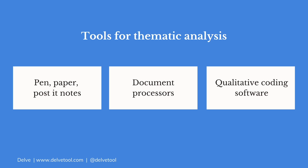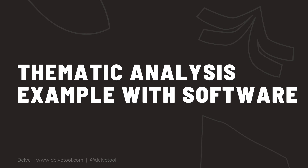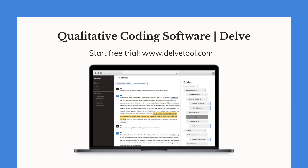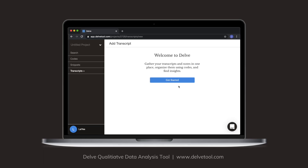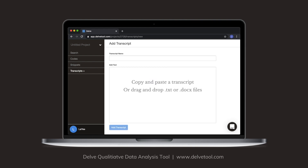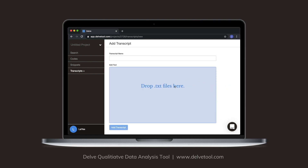When practicing thematic analysis you can use pen and paper, document processors, or qualitative coding software. We highly recommend using qualitative coding software. Next, we'll walk you through an example of how to do the same thematic analysis steps using the qualitative coding software Delve. Before you can start, make sure your data is prepared — audio recordings should be transcribed and notes and other data should be ready to go.